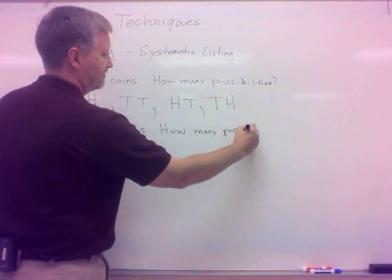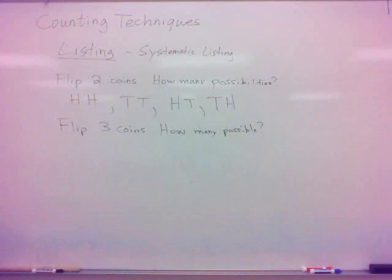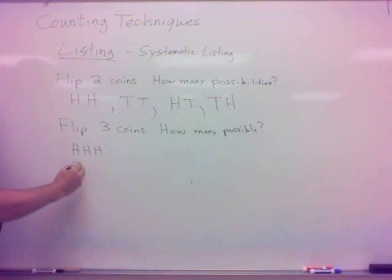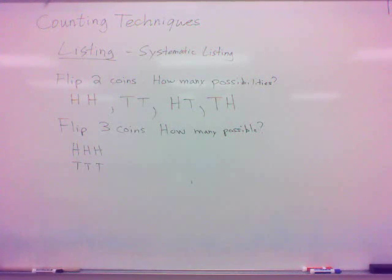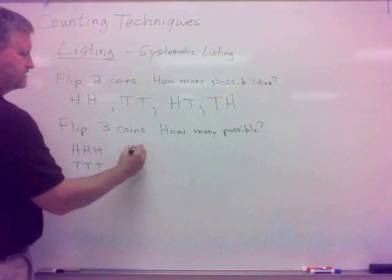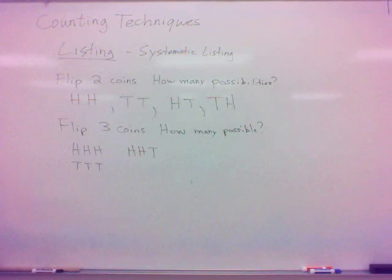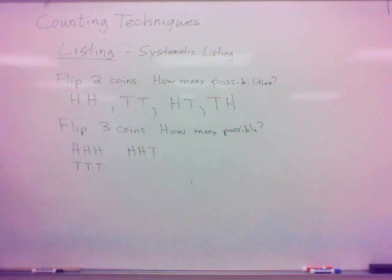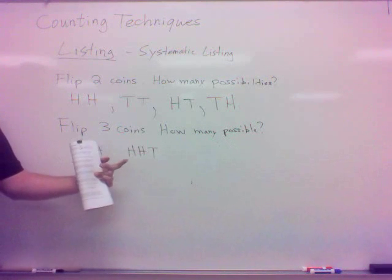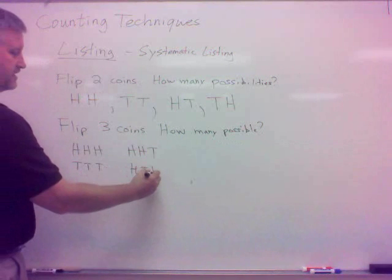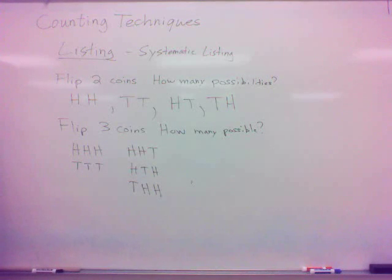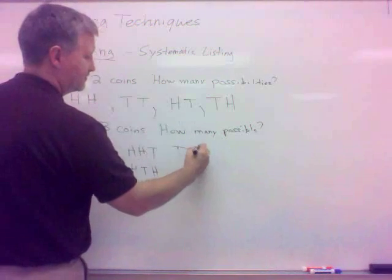What about if we flip three coins? How many possibilities are there? Well again, we can have all heads - heads, heads, heads. We can have all tails - tails, tails, tails. But then we can have variations of heads and tails, right? We can have two heads and one tail. Now again, making a distinction between first, second, and third coin, that's one possibility with two heads and one tail, but there's also a couple others. I could have them in a different order, the tails in a different spot. I could have a heads, tails, heads, or I could have the tails and then the heads, heads.